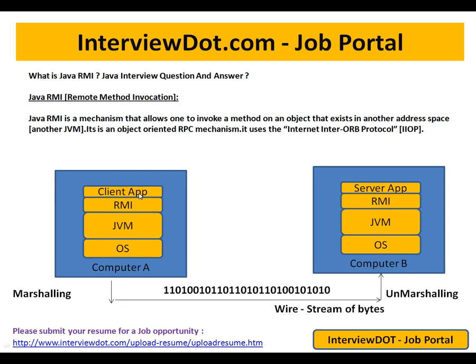Marshaling means converting your user-friendly objects into a stream of bytes. Unmarshaling means converting those stream of bytes back, understanding the attributes, and invoking the exact method in the server application. This is the purpose of RMI — Remote Method Invocation.